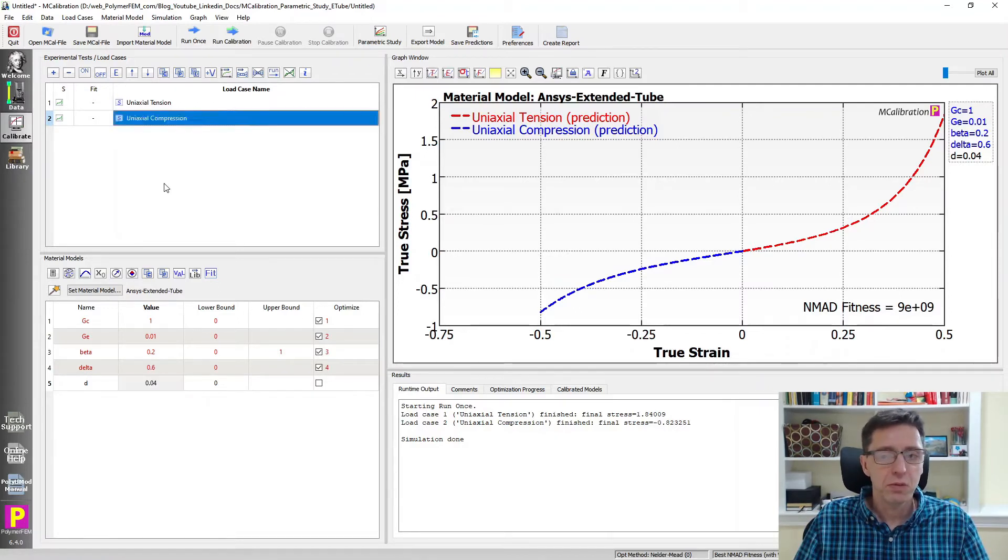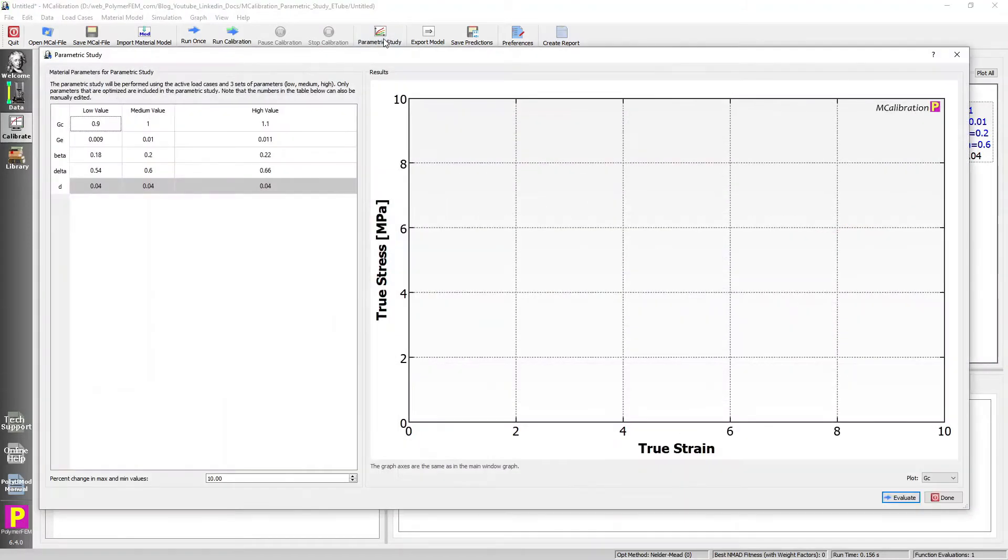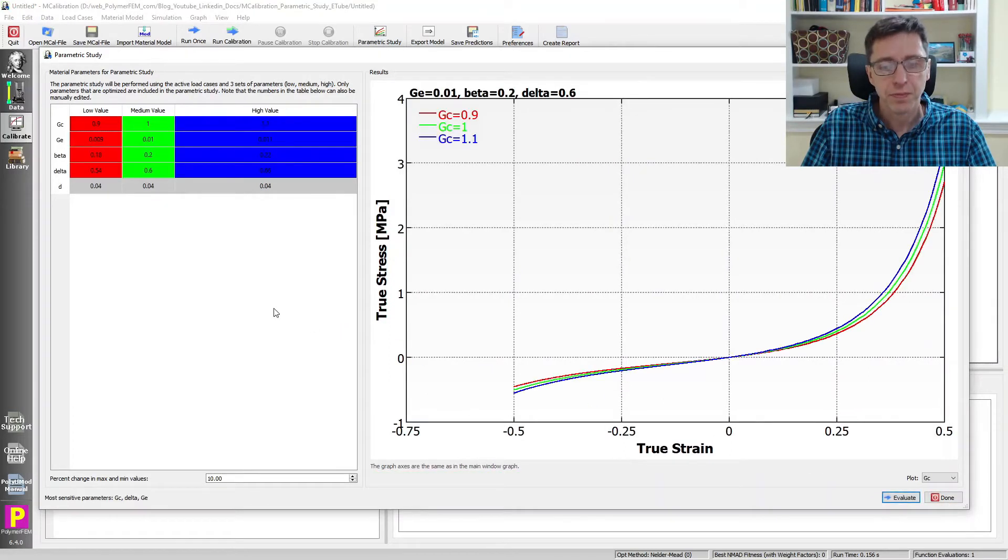What does that mean for how we use this model? You can manually tweak these here in this table and then run once, but there is a feature of mCalibration that makes it easier and faster, and that's the parametric study. I'm going to demonstrate that. Clicking on parametric study, I'm going to click evaluate. Here's what it looks like once you do that.